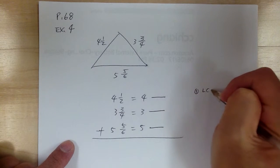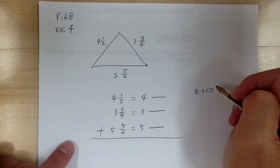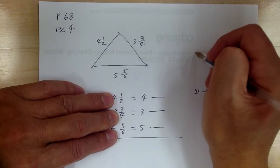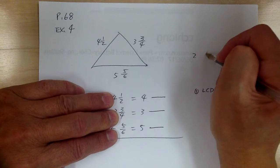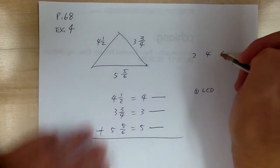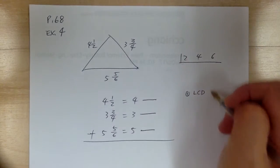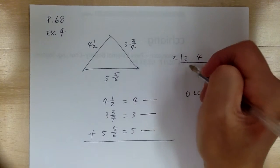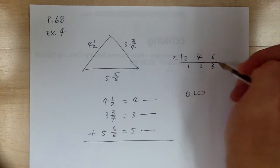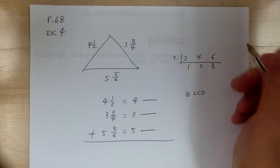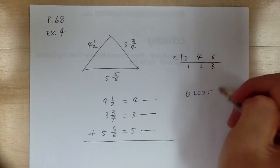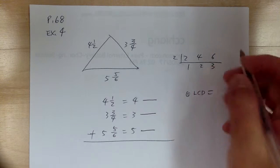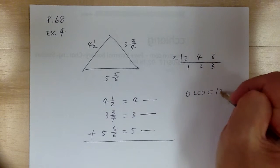Step 1: get your LCD. The denominators are 2, 4, and 6. Divide by 2 — you get 1, 2, and 3. So your LCD is 2 times 1 times 2 times 3, which gives you 12.